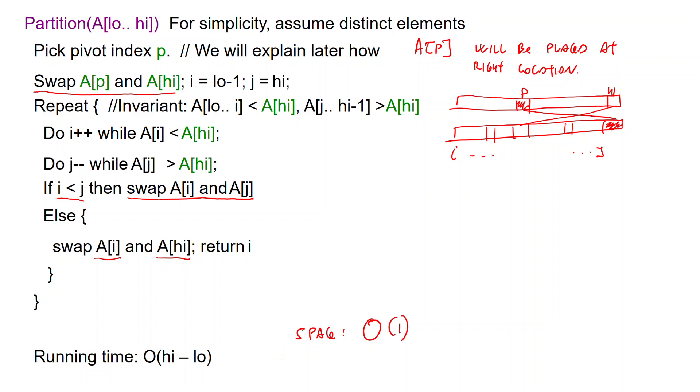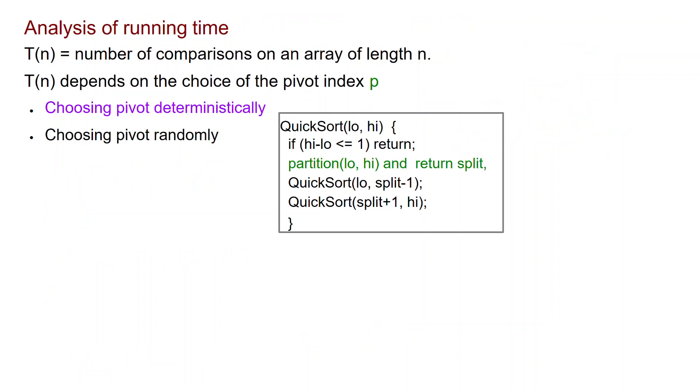Now we still have to explain how we pick this pivot index p, and this is going to affect the running time. So the running time T of n is going to depend on the choice of the pivot index p. And there are two natural ways in which you could pick the pivot index p. The first choice is to pick the pivot deterministically. With some specific procedure like always pick the midpoint or always pick the last element. And the other popular choice is to pick the pivot randomly. Let us first see what happens if you choose the pivot deterministically.